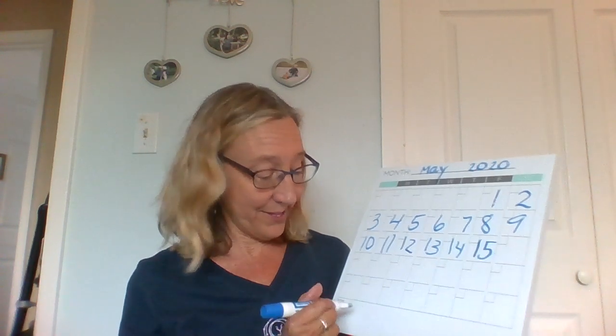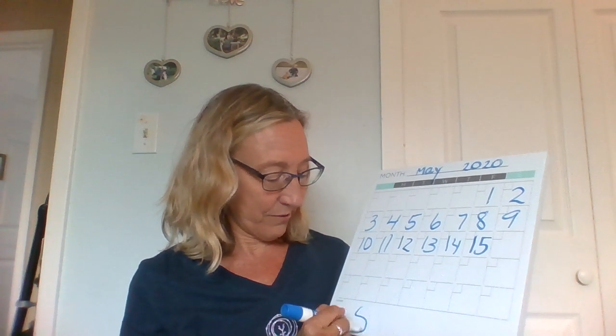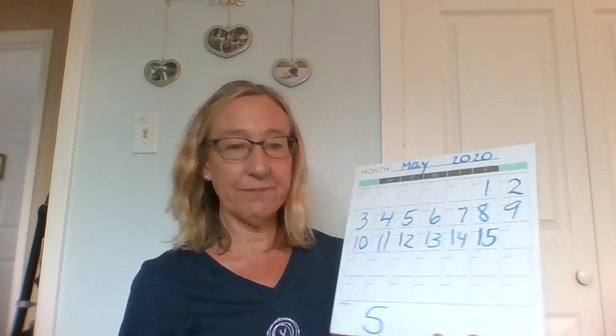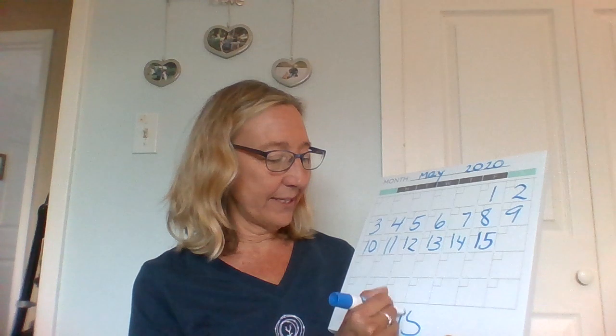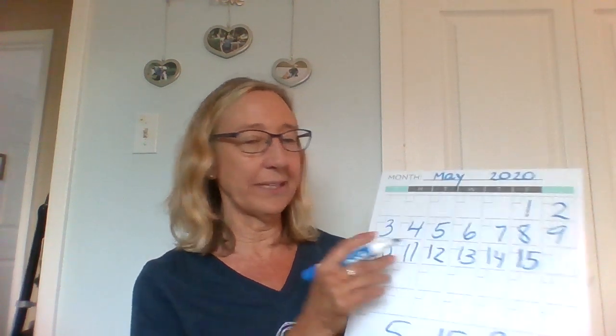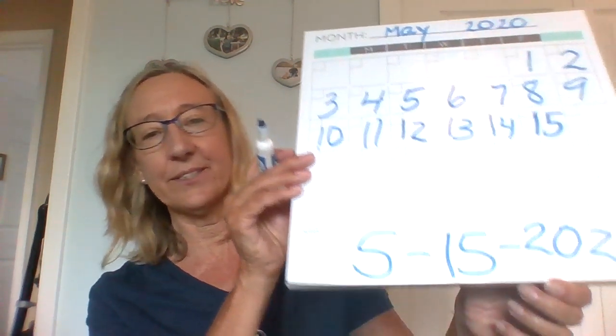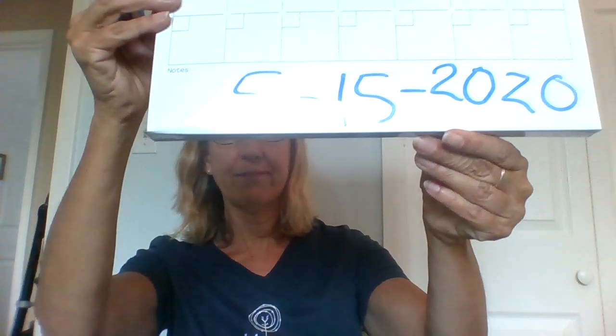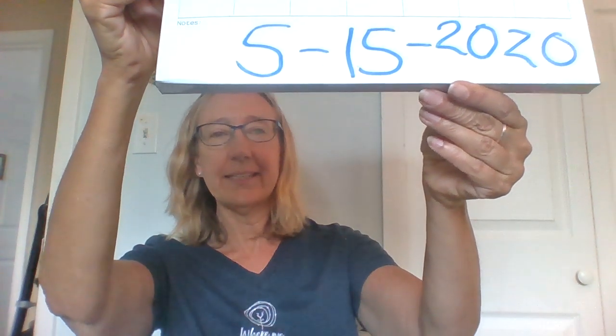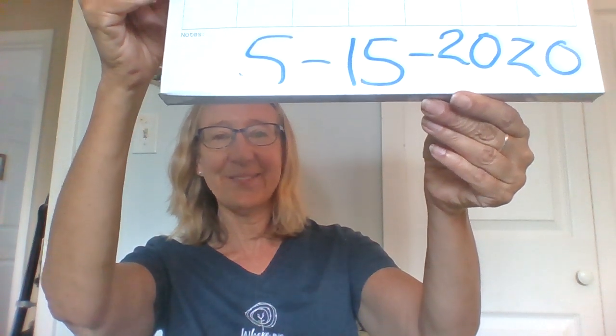So I'll put the 15 there. It is still the fifth month, so May is a five, the date is 15, and the year is still 2020. So the date will look like this today: five dash 15 dash 2020.